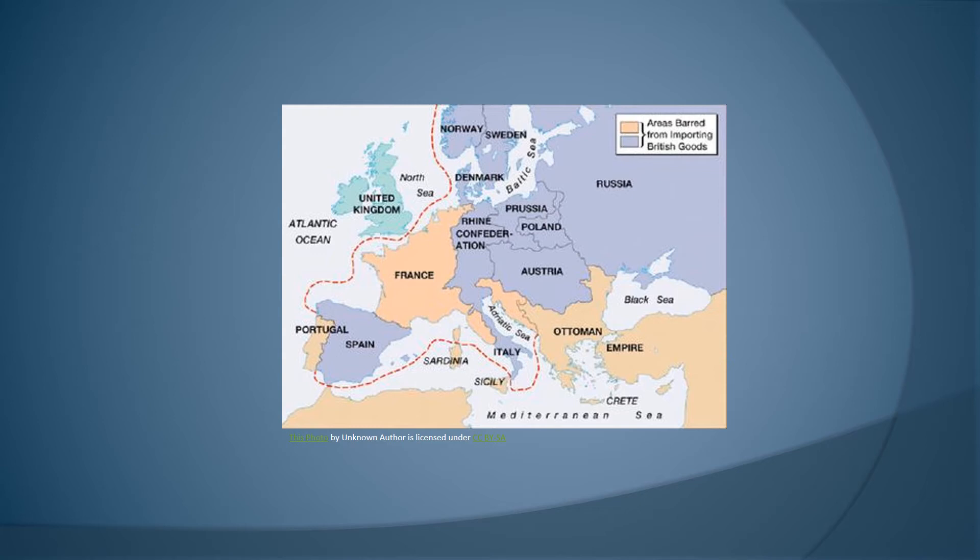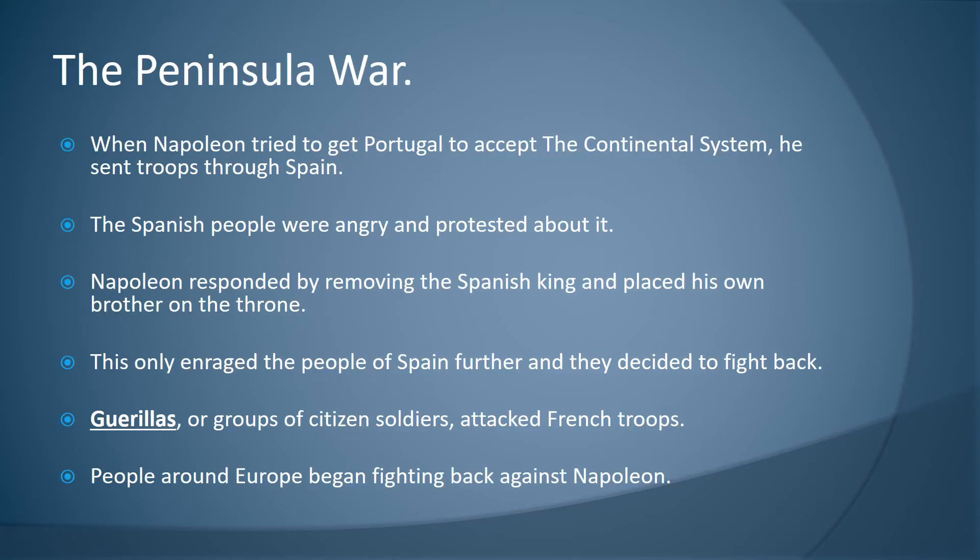Here's a picture of what the blockade looked like. You can see the United Kingdom on the outside, and the red dotted line shows where the blockade was.